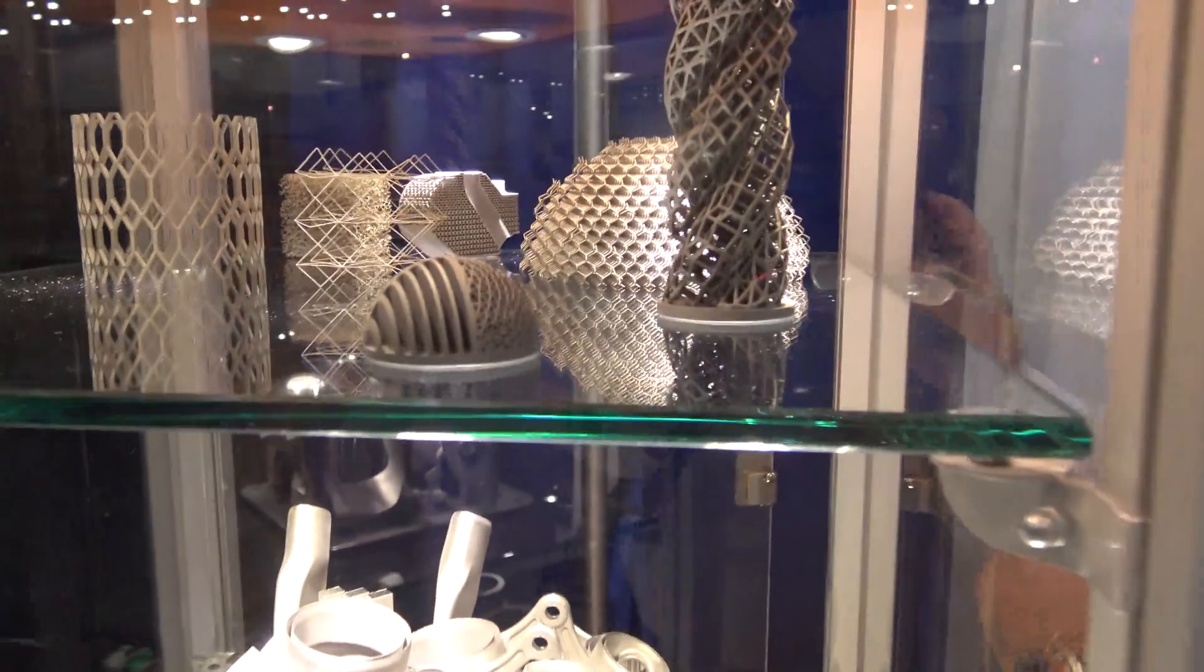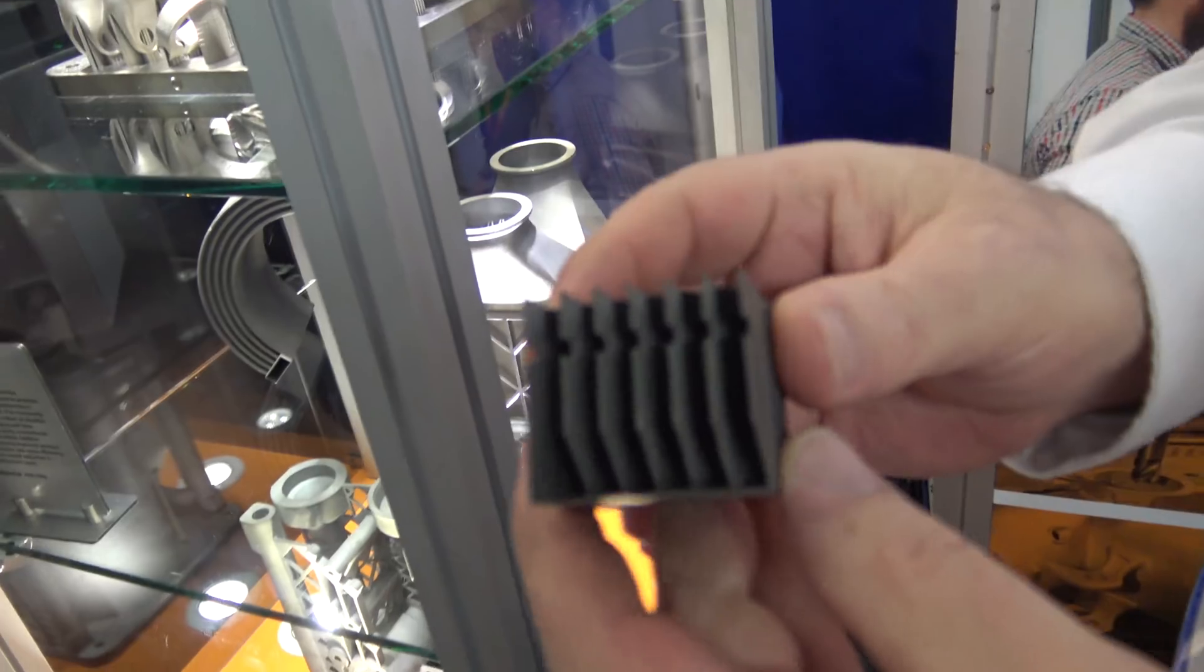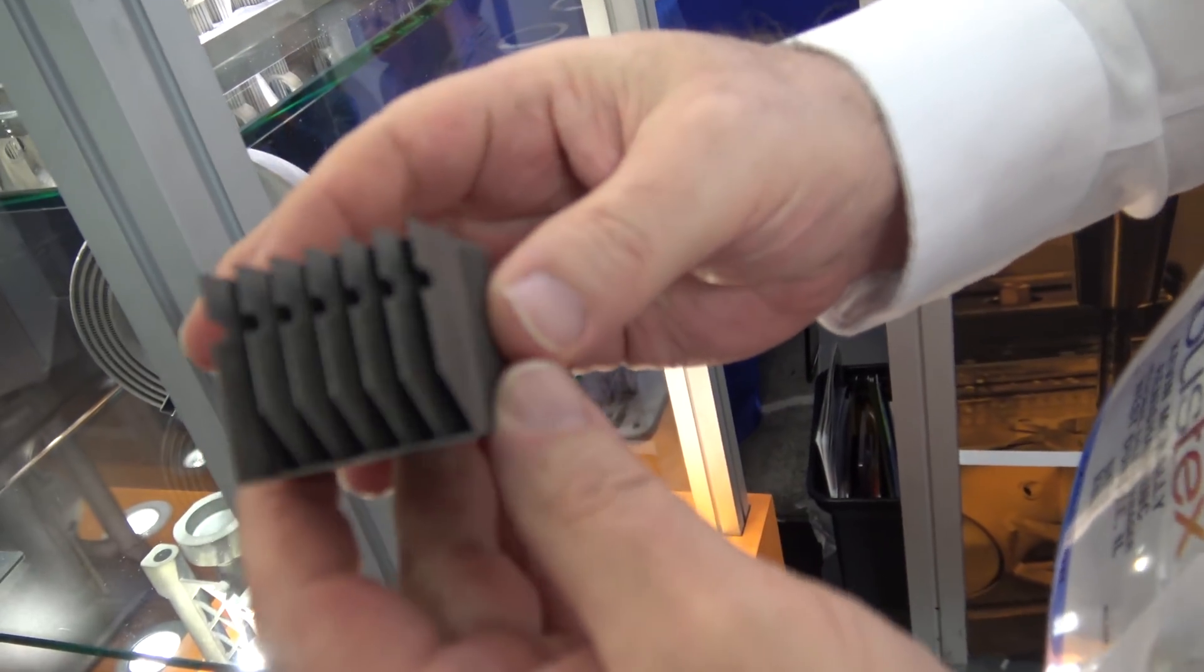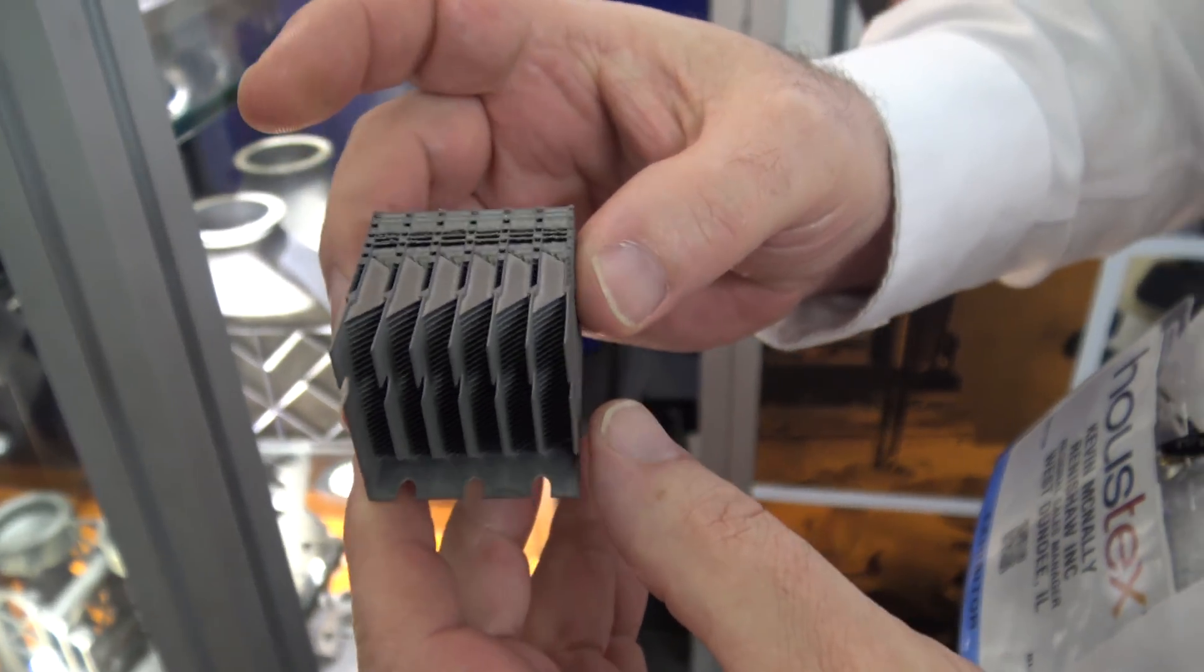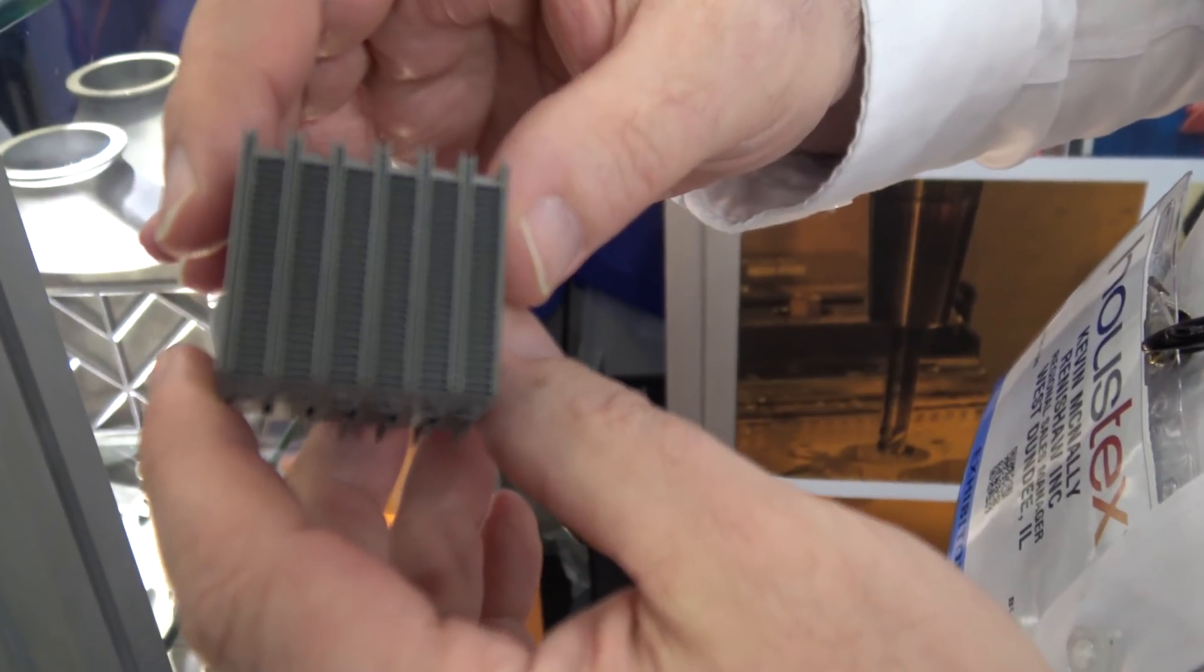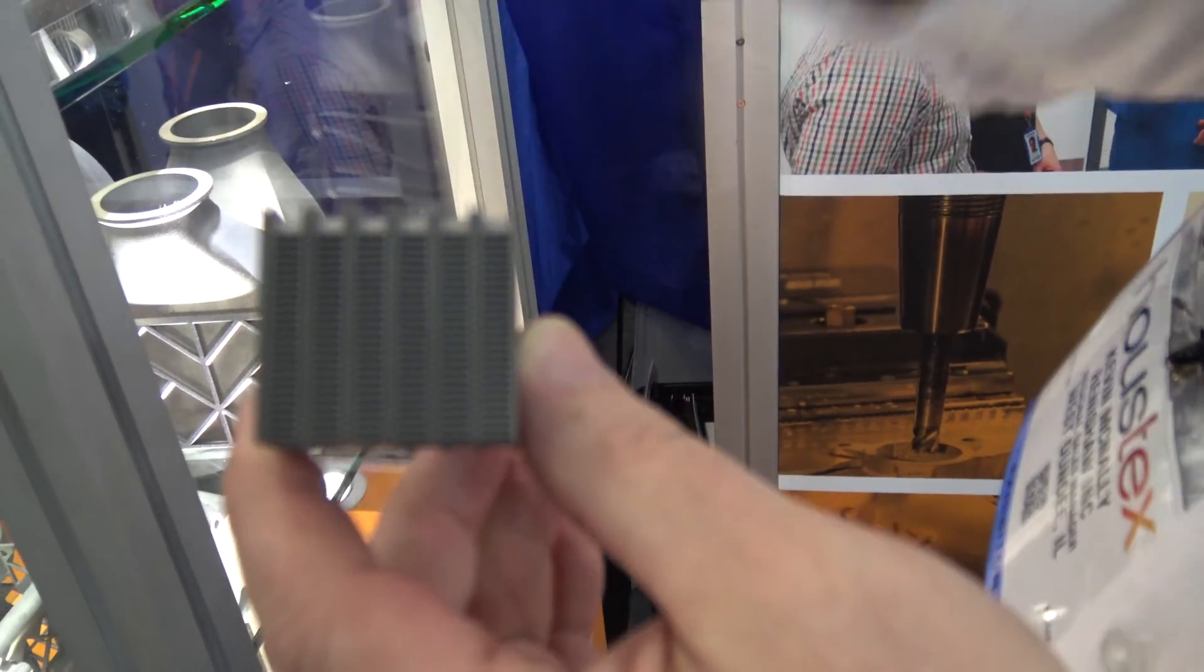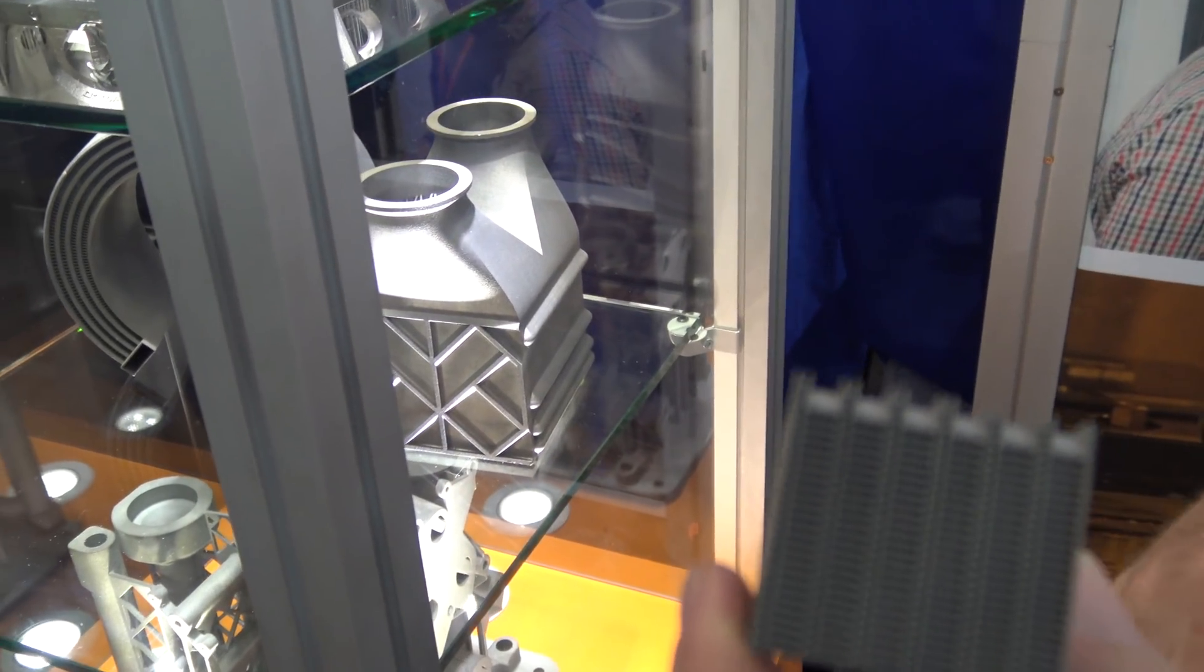This is part of a heat exchanger. Here's an example because it shows you the definition down to which we can print. Very thin walls, and that's what heat exchangers need to have, lots and lots of wall area to dissipate the heat. These are both heat exchangers as well, these two large parts inside.